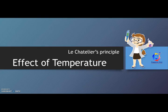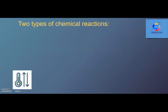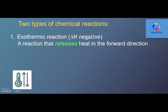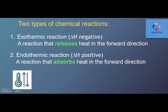Hello everybody. Today we are going to discuss how the change in temperature affects a system at equilibrium based on Le Chatelier's principle. In general, there are two types of chemical reactions known as exothermic and endothermic reactions. A reaction that releases heat in the forward direction is called an exothermic reaction — this type of reaction has a negative delta H. Whereas a reaction that absorbs heat in the forward direction is called an endothermic reaction — it has a positive delta H.